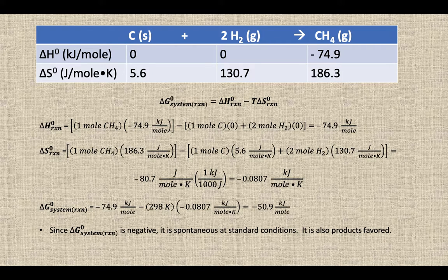If your delta G is negative, that means it's spontaneous, thermodynamically favorable at standard conditions in the direction that it's written. It's going to make that methane gas, CH4, all on its own without any outside intervention from you. It's products favored.